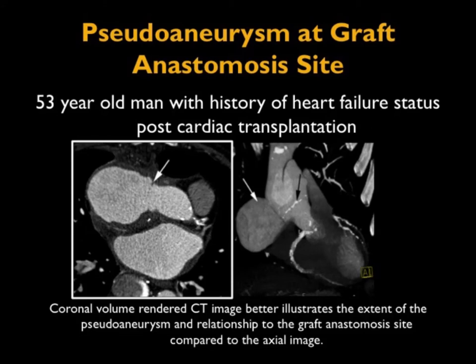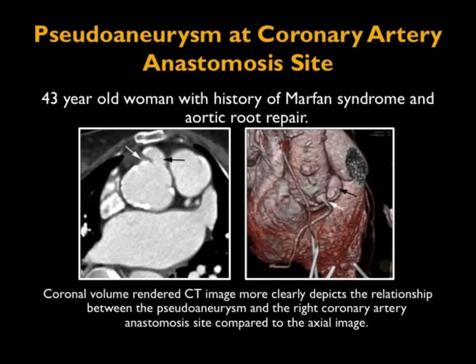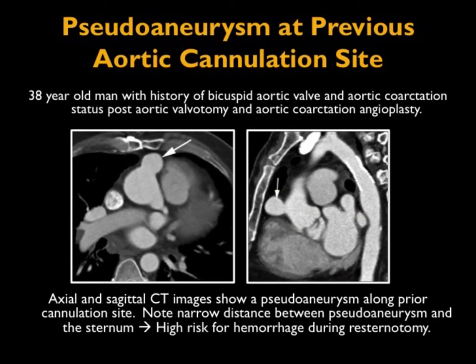Here's a nice example of a pseudoaneurysm at the graft anastomotic site in a patient with a history of heart failure and cardiac transplant. On volume rendering, you can see the pseudoaneurysm and its relationship to the graft anastomotic site very well on 3D imaging. Another example shows a coronal volume-rendered view showing the relationship between the pseudoaneurysm and the right coronary artery anastomotic site — seen a little better in 3D than on axial images, though visible on both.